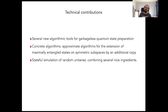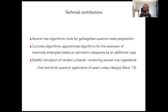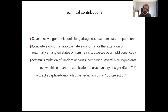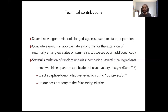For the stateful simulation of random unitaries, we use different techniques. We believe this is the first application in the quantum setting of exact unitary designs constructed by Cain in a 2015 paper. We also describe an adaptive-to-non-adaptive reduction using post-selection: instead of making adaptive queries, we make non-adaptive queries using a maximally entangled state, then use a version of the teleportation protocol to teleport in the actual input. We also use the uniqueness property of the Stinespring dilation of a quantum channel.